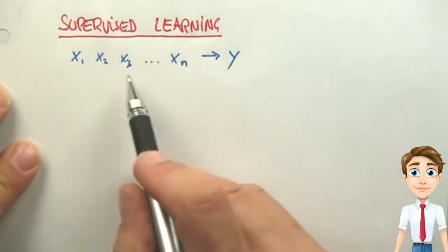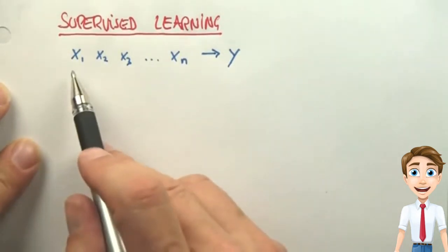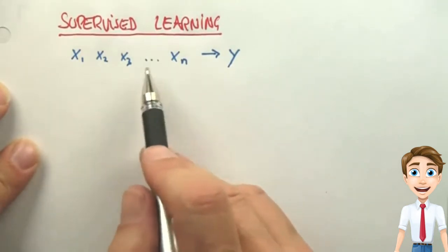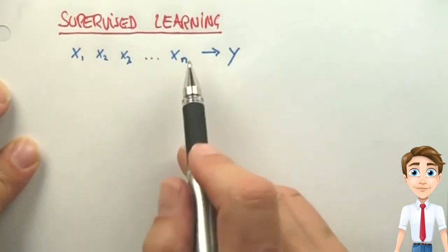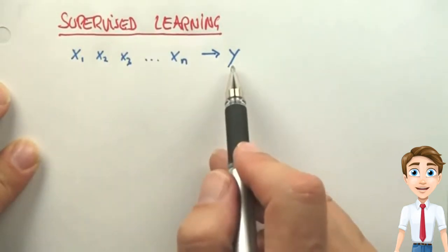But what it wishes to produce is a function that allows us to predict future customers. So if a new person comes in with a different feature vector, can we predict as good as possible the functional relationship between these features X1 to Xn all the way to Y.